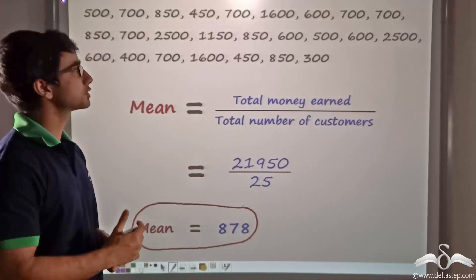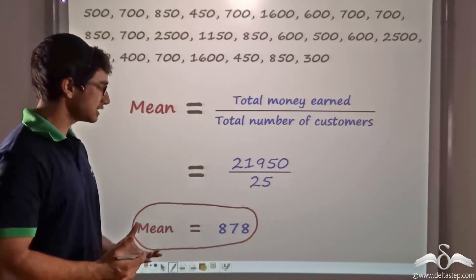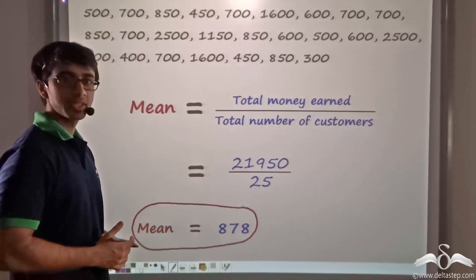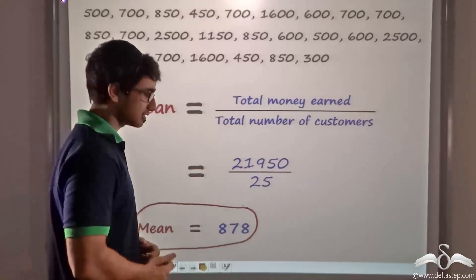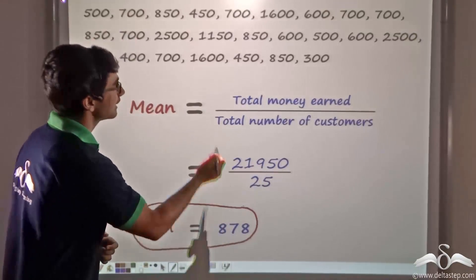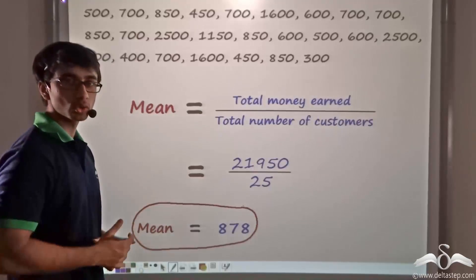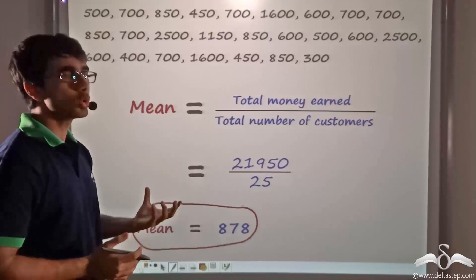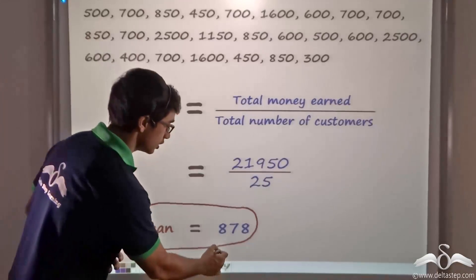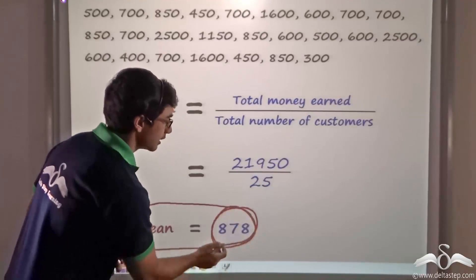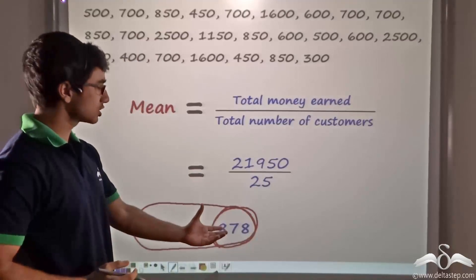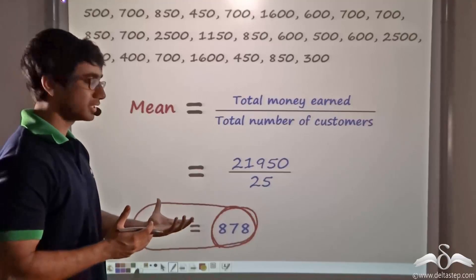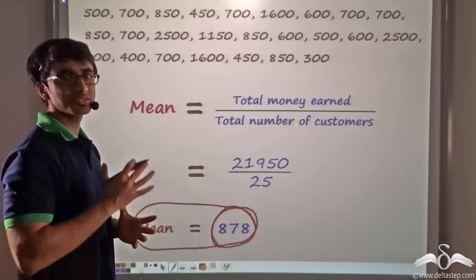Now the shopkeeper notices one thing. He finds that this value mean is meaningless in this case. Why? Because there are very few dresses which cost higher than 878. Also, there are no dresses which lie immediately around this region. And no customer has bought many dresses which cost around 878. So to the shopkeeper, this value as of now is more or less meaningless.